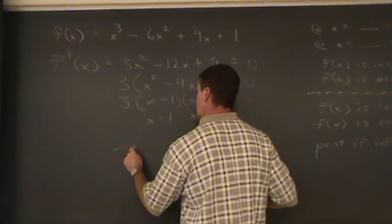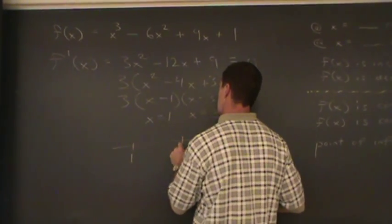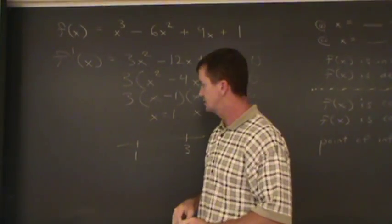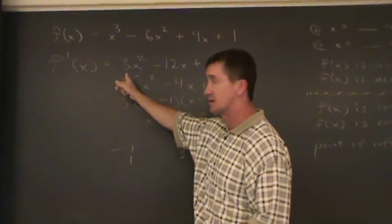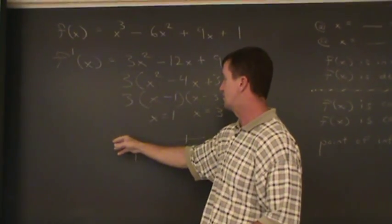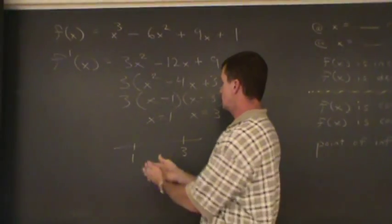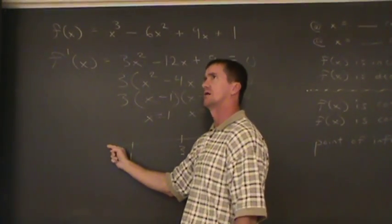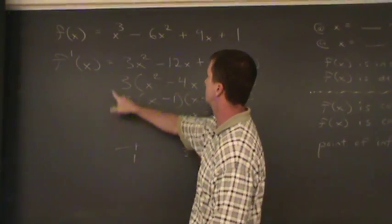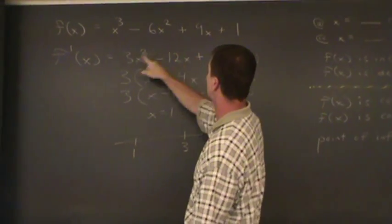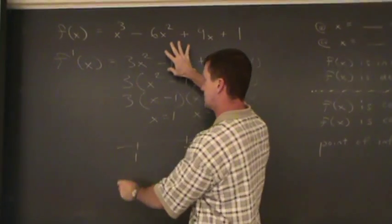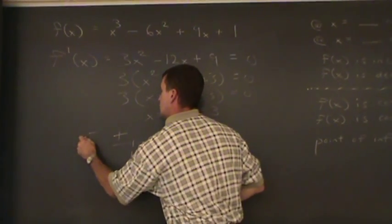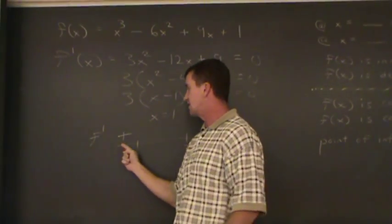But to determine which value is possibly a max or a min, I'm gonna do the first derivative test. I'm gonna pick some test values and plug it into the first derivative, determine what's going on with this function. So these are my critical values. A value to the left of 1, how about 0? I'm gonna test the first derivative at 0, I plug it into the first derivative, and I get a positive number. So the first derivative is positive on the interval up to 1.